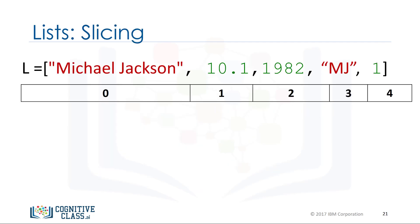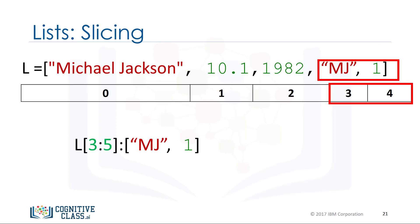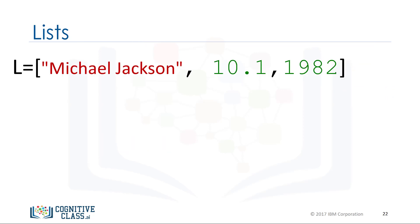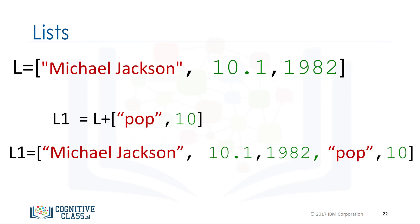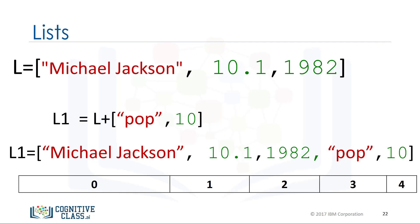We can also perform slicing in lists. For example, if we want the last two elements in this list, we use the following command. Notice how the last index is one larger than the length of the list. The index conventions for lists and tuples are identical — check the labs for more examples. We can concatenate or combine lists by adding them, and the new list has the following indices.